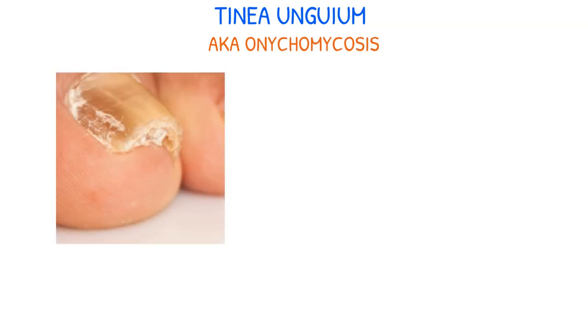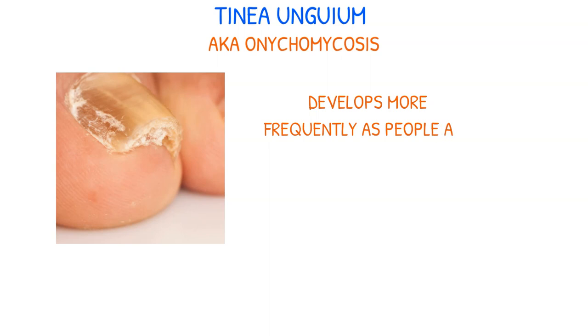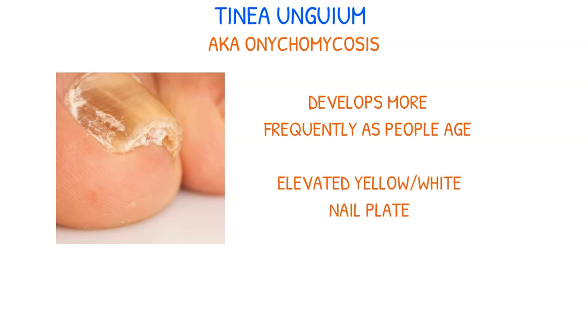The last condition is Tinea unguium, also referred to as onychomycosis. This nail fungal infection, which occurs more frequently as people age, can appear as an elevated yellow or white nail plate that has accumulated hyperkeratotic material inside of it.